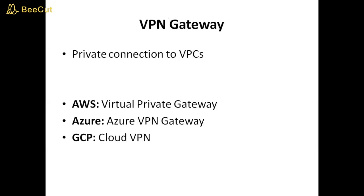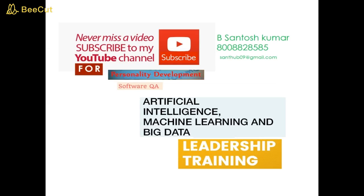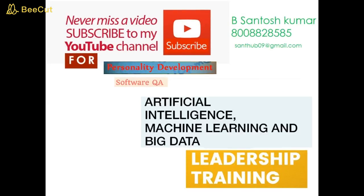VPN gateway: a private connection to a VPC. AWS: virtual private gateway. Azure: Azure VPN gateway. GCP: Cloud VPN.